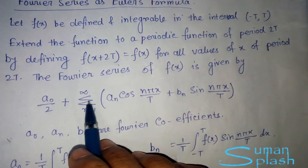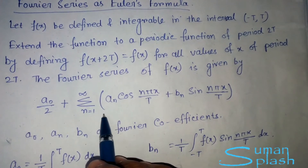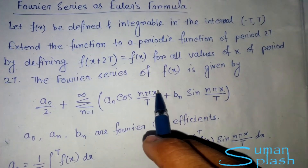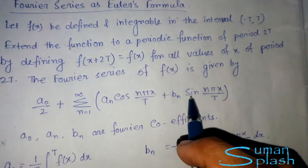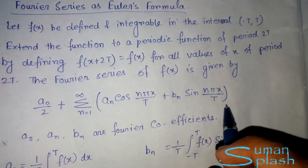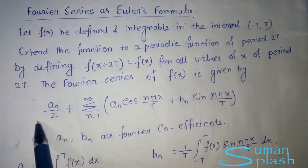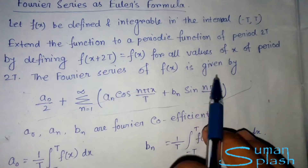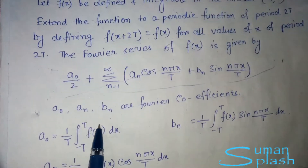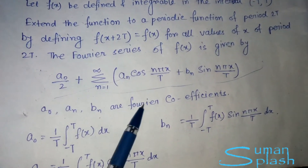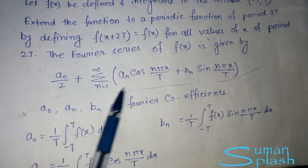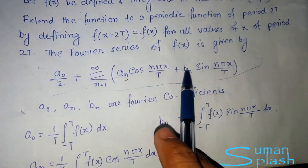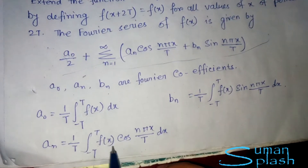The Fourier series of f(x) is given as: a₀/2 + summation from n=1 to infinity of [aₙ cos(nπx/t) + bₙ sin(nπx/t)]. This is the complete formula. Here a₀, aₙ, and bₙ are the Fourier coefficients.